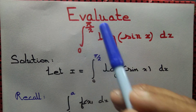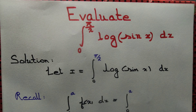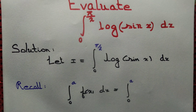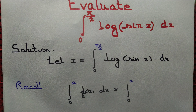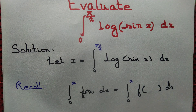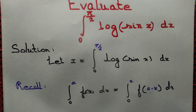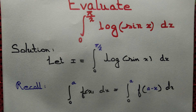Evaluate the integral from 0 to π/2 of log(sin x) dx. We start by letting i equal to the integral from 0 to π/2 of log(sin x) dx. You might be tempted to just find the antiderivative of log(sin x), but that cannot be found directly. So the only choice is to use some property of definite integrals to evaluate this integral.